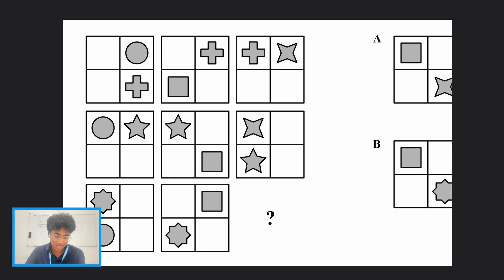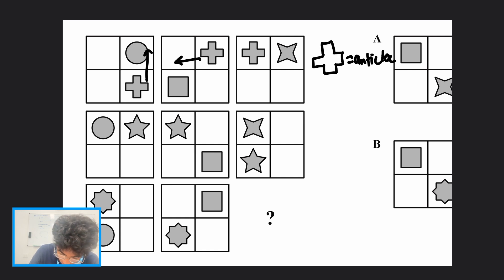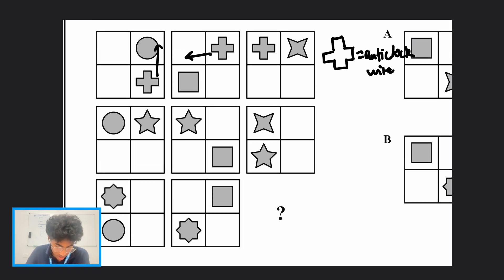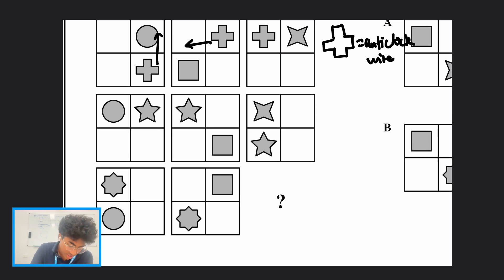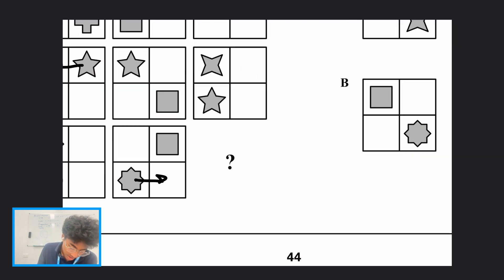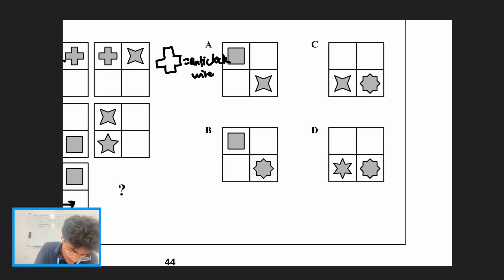Now the next question. In this pattern the cross moves anti-clockwise — from here, to here, to here. We can confirm by checking across the rows. Also, the star in another row goes anti-clockwise from position to position as well. In the current row, this unusual star shape is moving anti-clockwise, which means in the mystery image it must move one more position anti-clockwise. So we can immediately cross out option A.